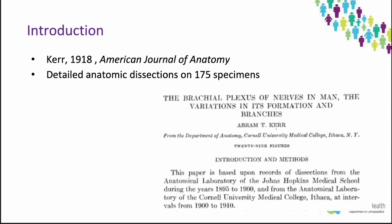The true form of the brachial plexus was described by Kerr after doing detailed anatomic dissection on 175 specimens. The article was called 'The Brachial Plexus of Nerves in Man: The Variations in its Formation and Branches,' and it was published in the American Journal of Anatomy in 1918.